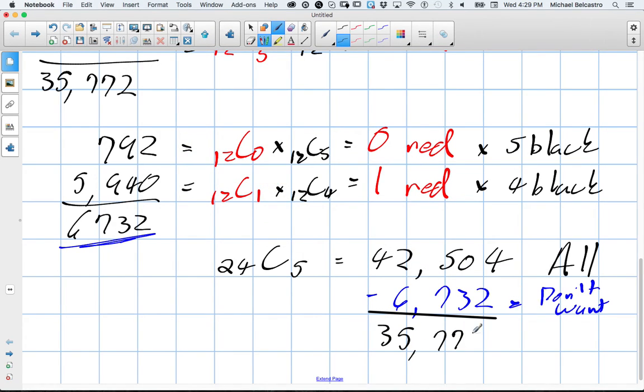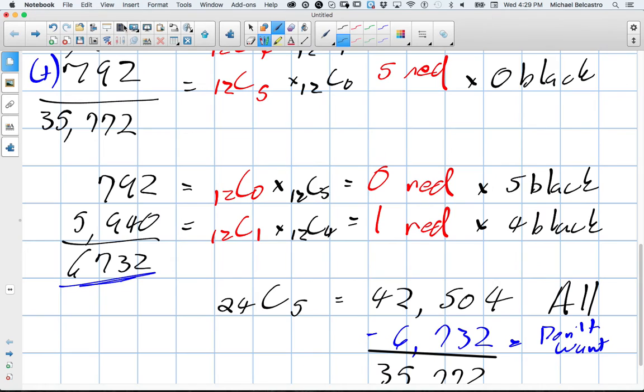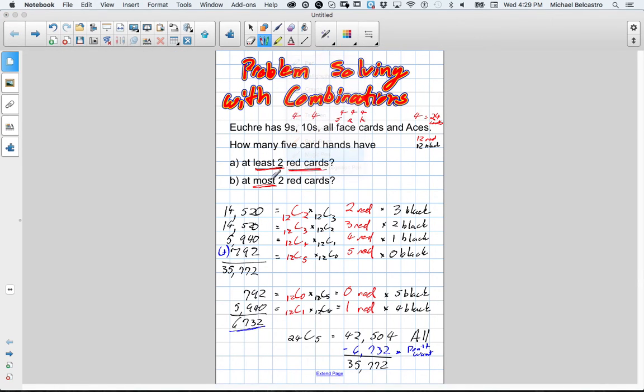So in questions like these, it's sometimes helpful to kind of decide, if we're looking at least two, that means I'm looking for two, three, four, five. It'll be easier to calculate for the opposite and subtract that from the total number of options. In this one where it says, at most two cards, it's actually much easier to calculate just the zero, one, two.